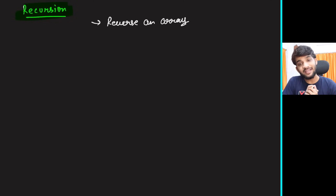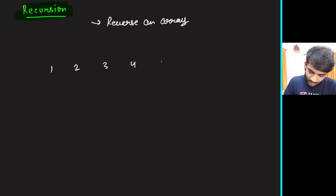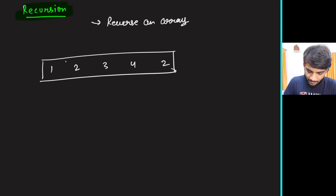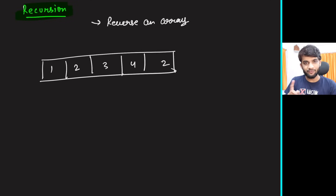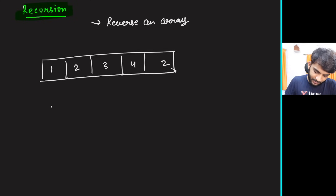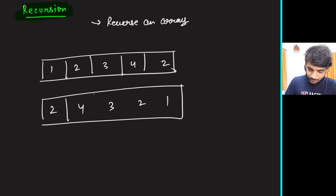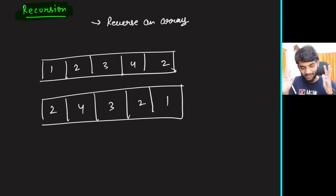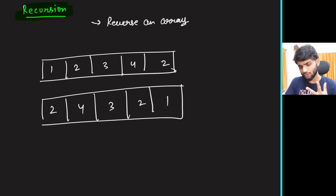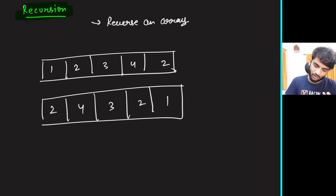Let's understand reverse an array. If I give you an array and ask you to reverse it, the reverse will be the elements in opposite order — there's no doubt about that. Generally, if I ask you to do this using a for loop, it's very simple.